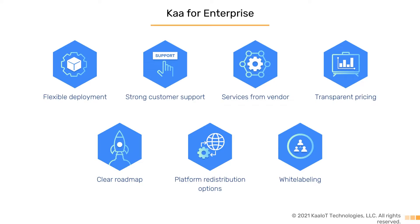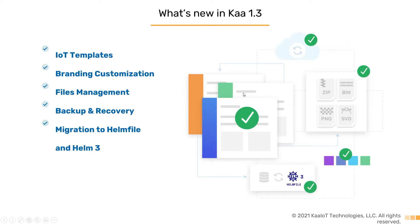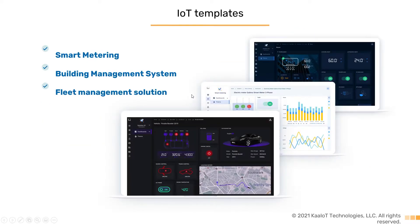Let's check out what's new. We added new IoT templates, branding customization, file management, backup recovery, and finally migration to Helm file and Helm 3. Now let's take a look at the dashboard templates. Currently there are three templates available for download: smart metering, smart building, and fleet management.